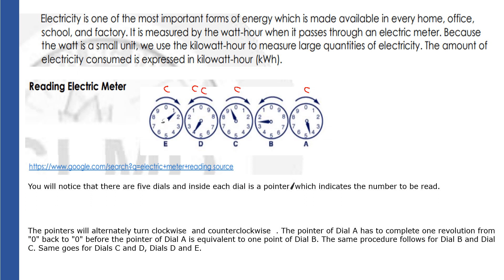Dial D and dial B move counter-clockwise — the opposite direction. The pointer of dial A has to complete one full revolution from zero back to zero before the pointer of dial B moves by one point. The same procedure follows for dials B and C, then C and D, and dials D and E — each dial completes a full rotation before the next one advances.